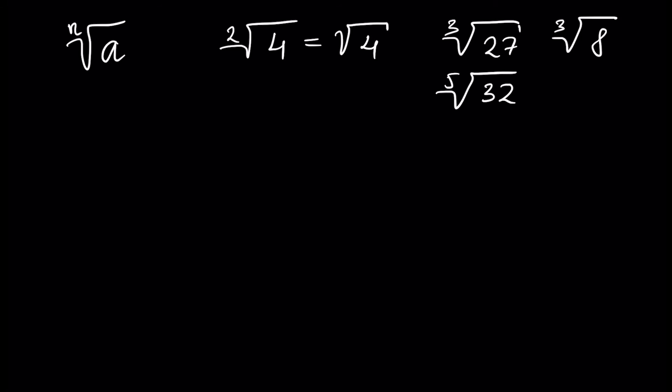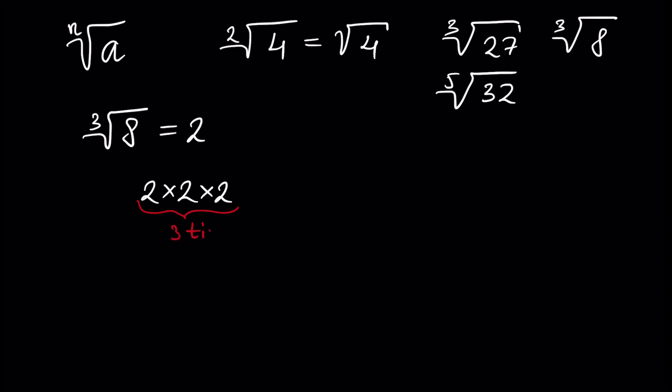Let's move to the definition — I will define it informally for better understanding. For example, the third root of 8 is 2. Why? Because if we multiply 2 to itself and take 2 exactly 3 times — because the power is 3 — the answer is 2, since exactly 2 multiplied to itself 3 times gives 8.